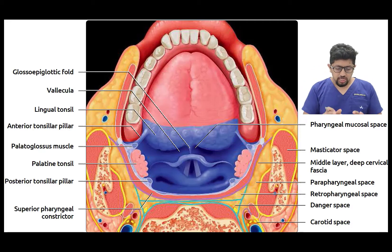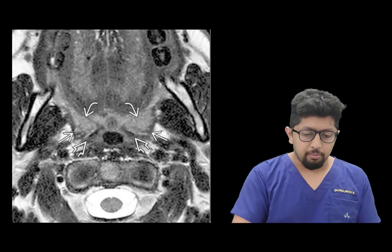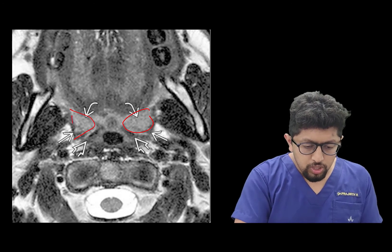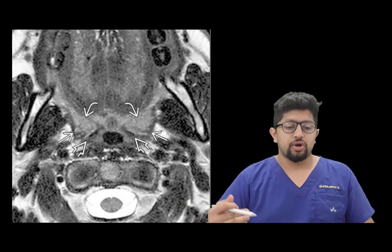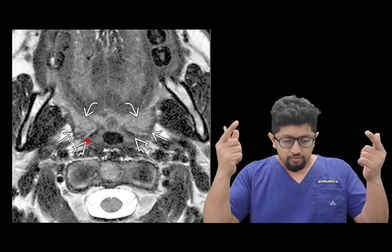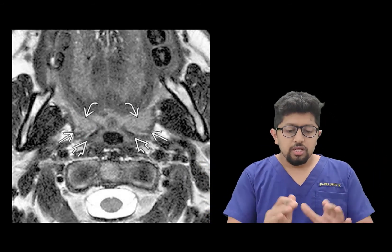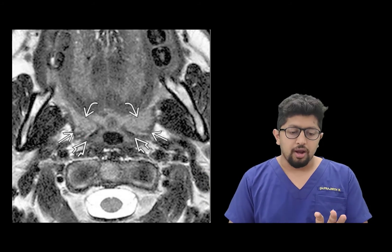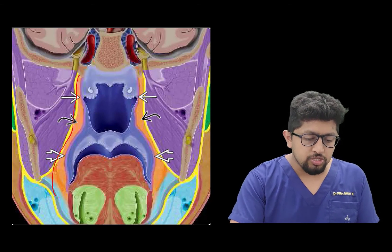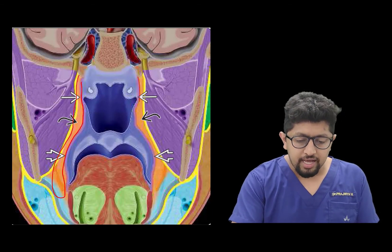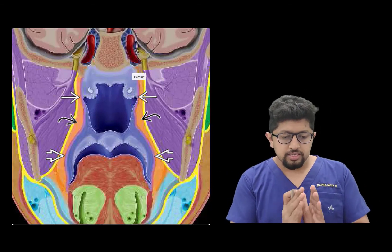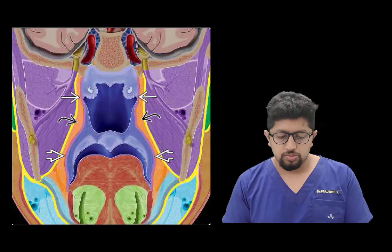On MRI, the palatine tonsil is clearly visible, covered posteriorly by the superior constrictor, with the palatopharyngeal muscle forming the posterior tonsillar pillar. These MRI findings correspond to the anatomical structures described earlier. The parapharyngeal space extends along the lateral aspect of the pharyngeal mucosal space and is the main structure in the lateral relation to this space.